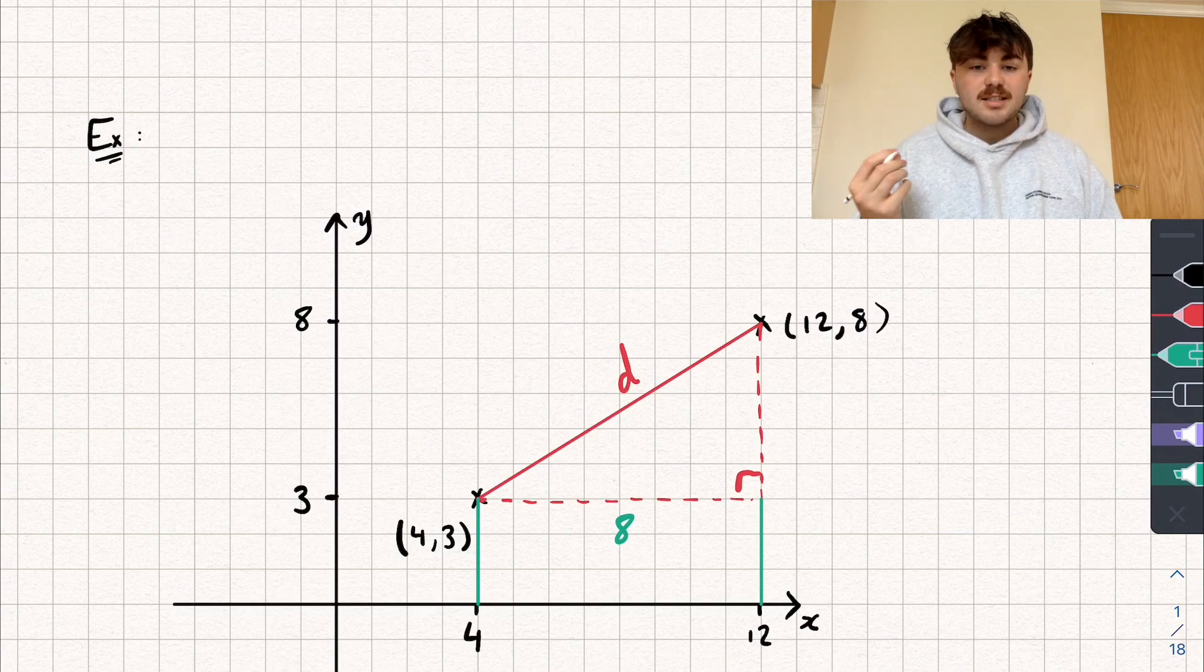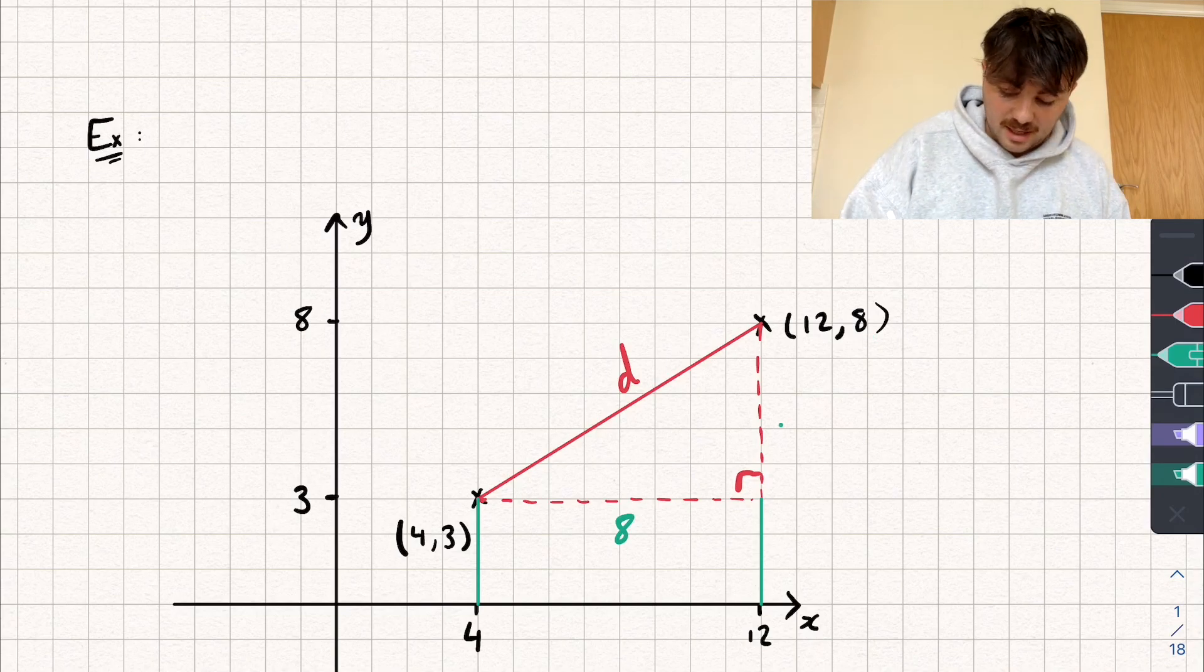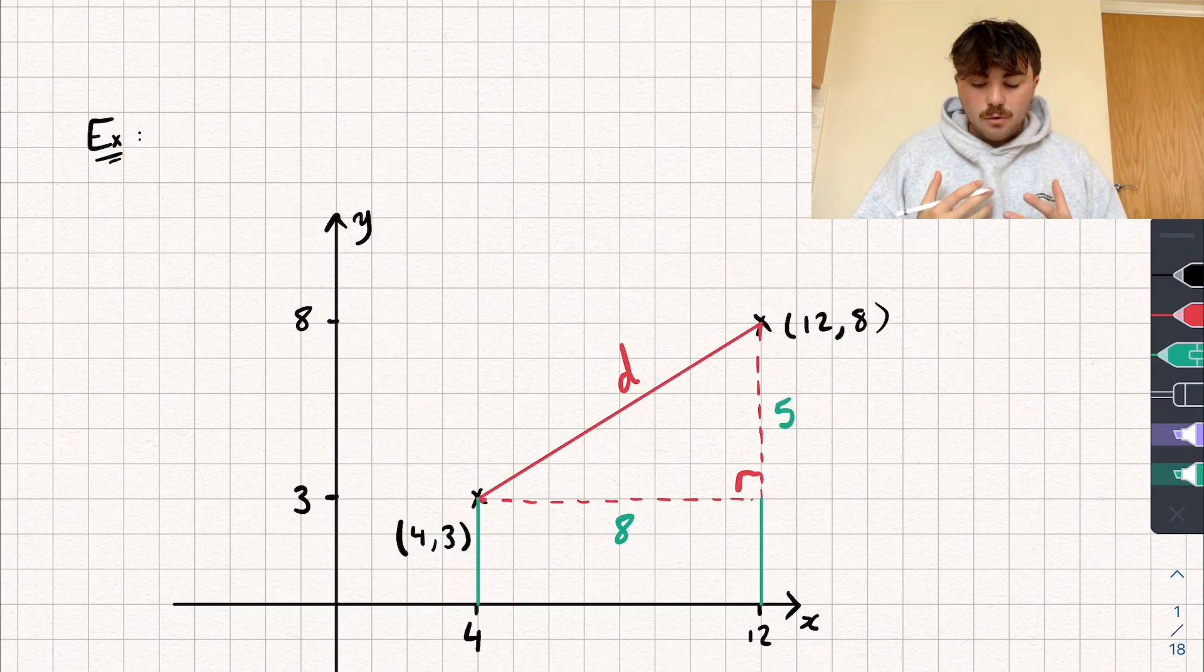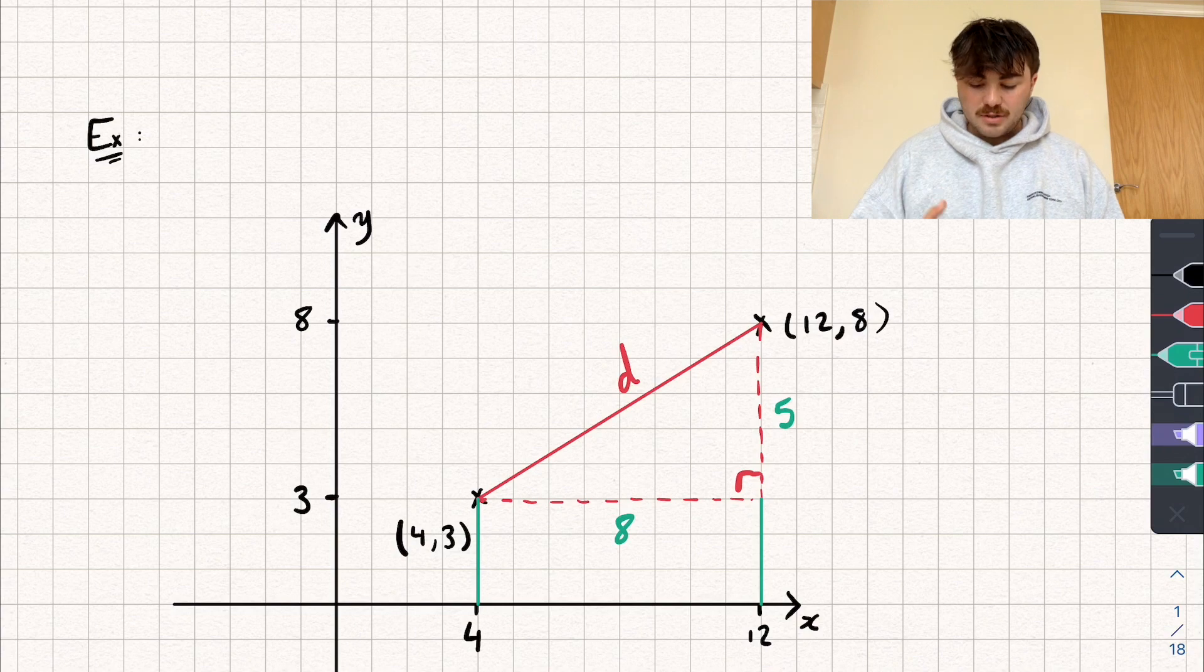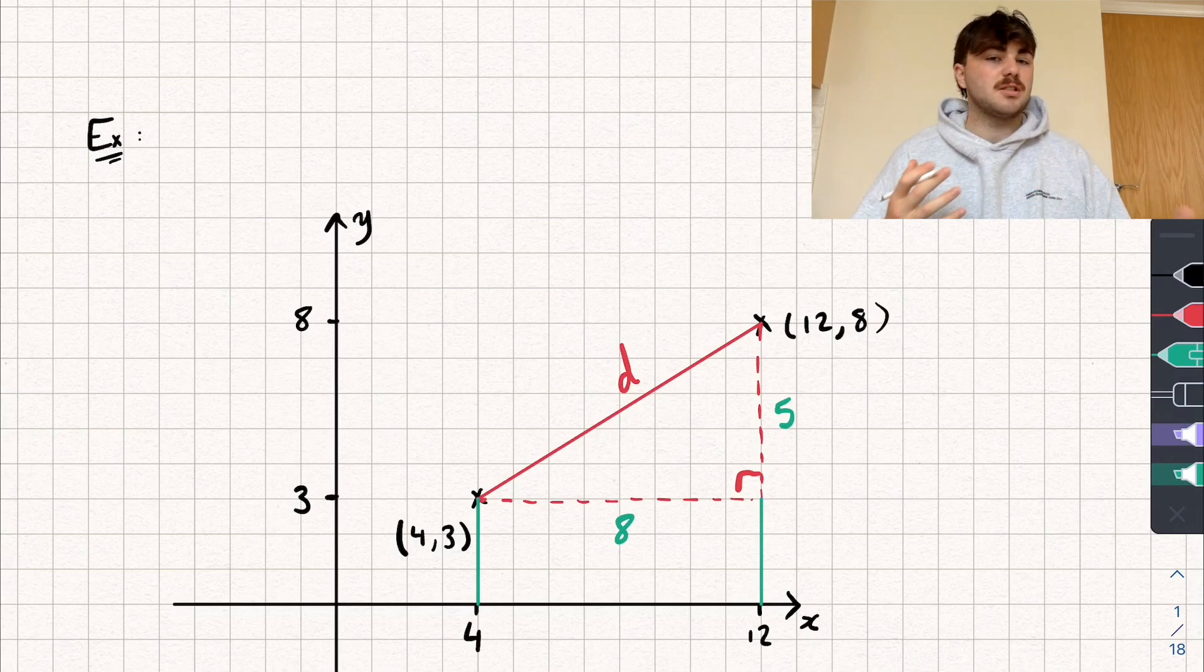And we're going to do the exact same logic to work out our other missing side. So here we have a Y coordinate of 8, here we have a Y coordinate of 3. So what's the difference between the two? 8 subtract 3 is going to give me 5, and that is the length of that missing side. Now you might be thinking, what if I did it the other way around? So say I did 4 subtract 12 and I've got negative 8, we can't have a negative side length. Well, when we do Pythagoras in a second, you'll see we're going to be squaring these numbers, so it doesn't really matter if they're positive or negative because when we square them, they're going to all come out positive, which is what we want for a length.